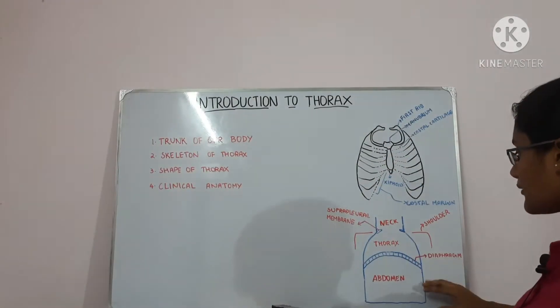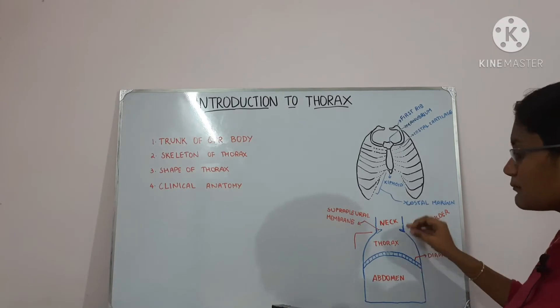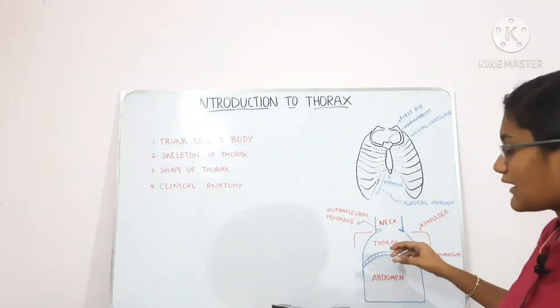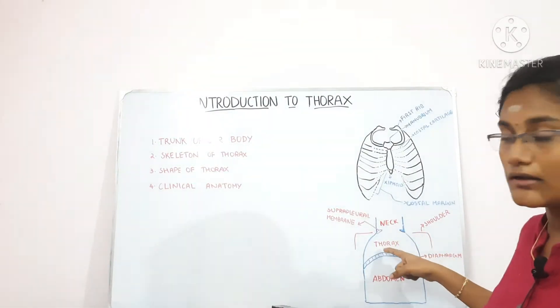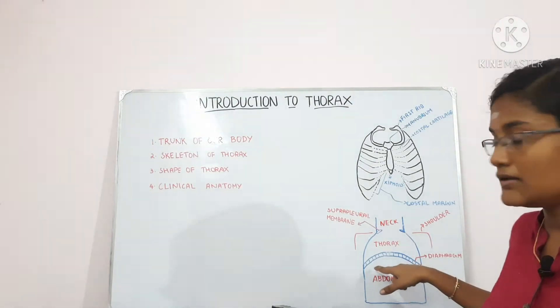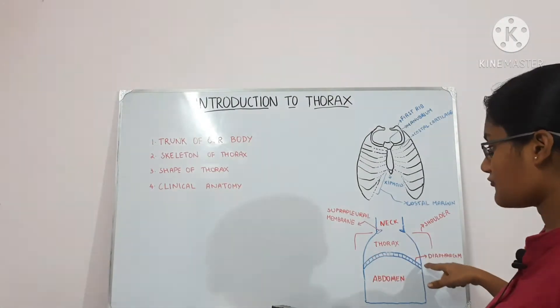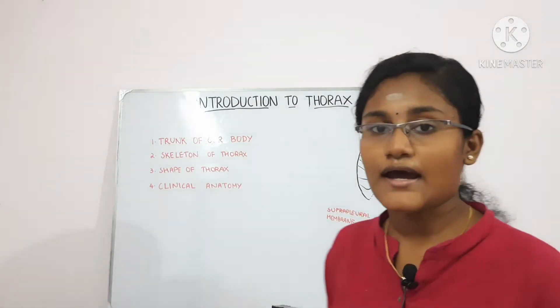This diagram shows the trunk of our body. The trunk is present below the neck and is divided into an upper part called the thorax and a lower part called the abdomen by a diaphragm.